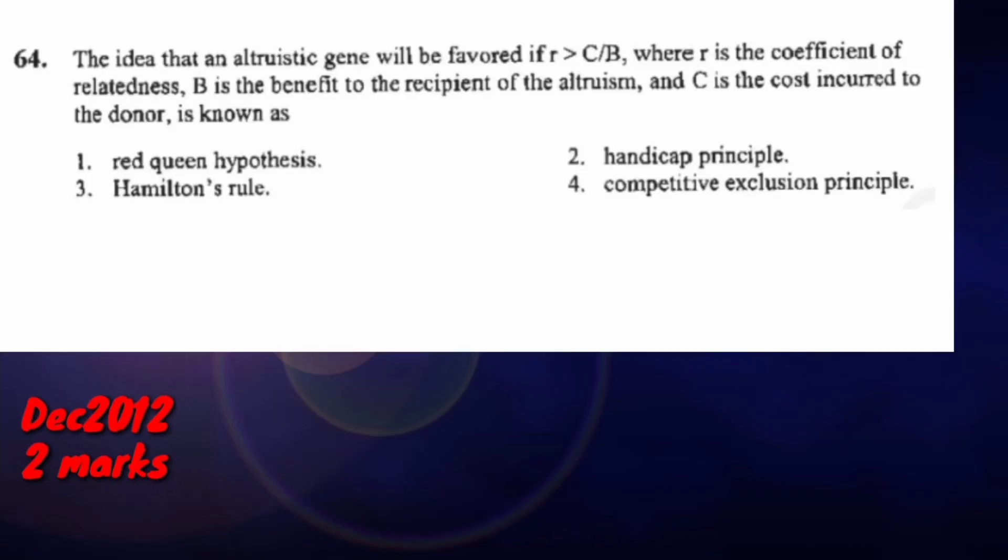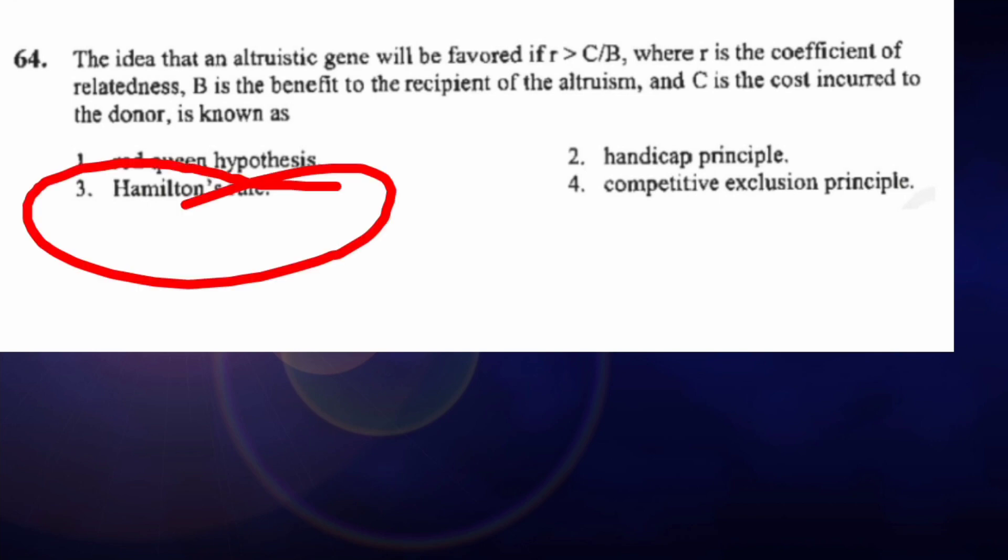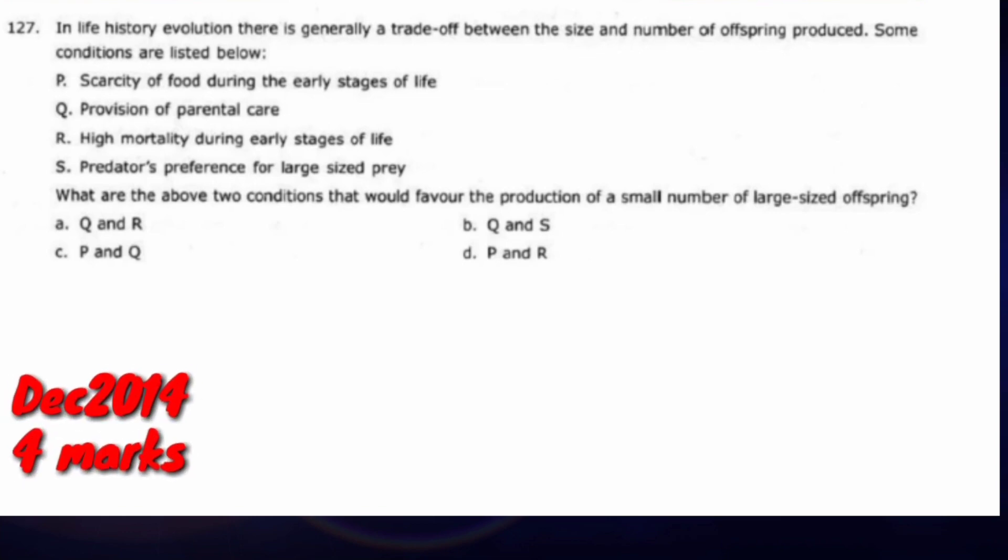The idea that an altruistic gene will be favored if r is greater than C/B, where r is the coefficient of relatedness, B is the benefit to the recipient of the altruism, and C is the cost incurred to the donor, is known as what? Here the options are given, and seeing the formula, it should come to your mind. Doesn't this formula look similar to Hamilton's rule? Correct! The answer is Hamilton's rule. It's slightly modified here but we should not get confused. Answer will be C, option number 3.